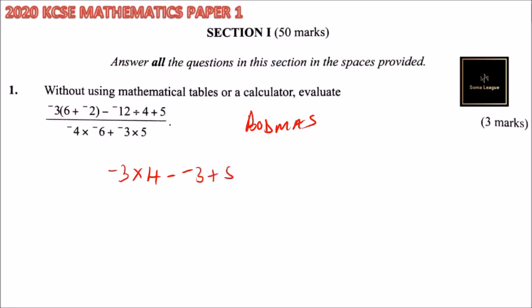In the denominator, we don't have brackets, we don't have Of, we don't have Division. We have Multiplication. So minus 4 times minus 6, that will give you 24, positive 24. Then we have minus 3 times 5, that will be minus 15.